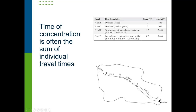We care so much about the time of concentration because we want to know when the entire catchment contributes flow to the outlet. At the beginning of the rain, only areas closest to the outlet are contributing flow, but when the furthest drops of water reach the outlet, that's basically when the entire catchment contributes.